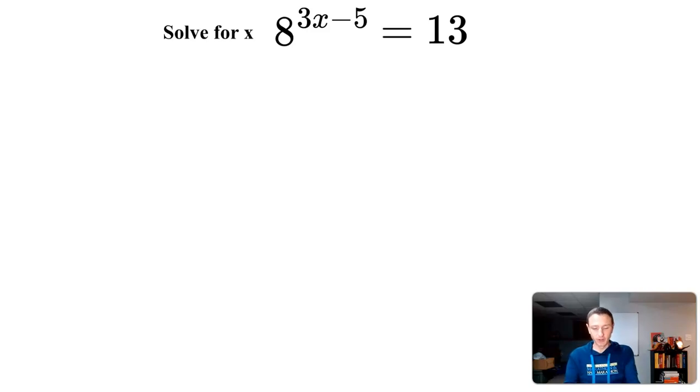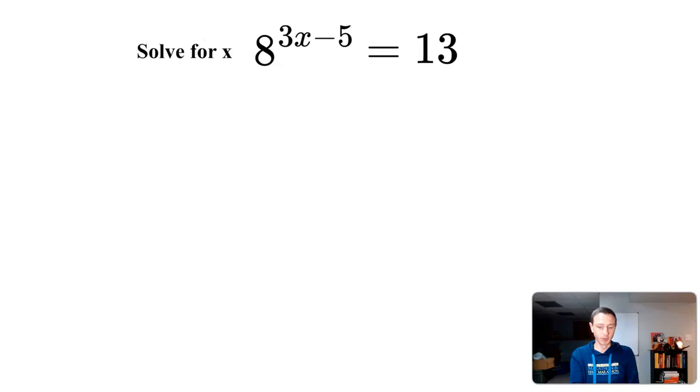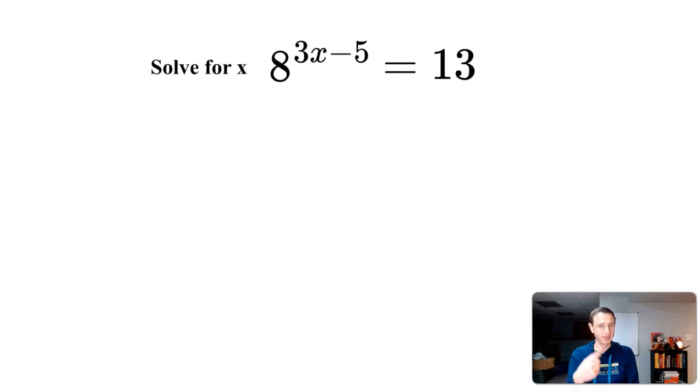So now in this scenario, since I don't have the ability to just change that base to 2 to some power, I have to now use natural logs. What I'm going to do is take the natural log of both sides, and here's what this is going to look like: ln(8^(3x-5)) = ln(13).